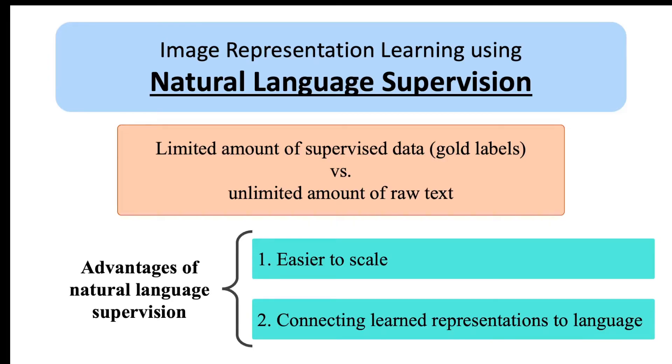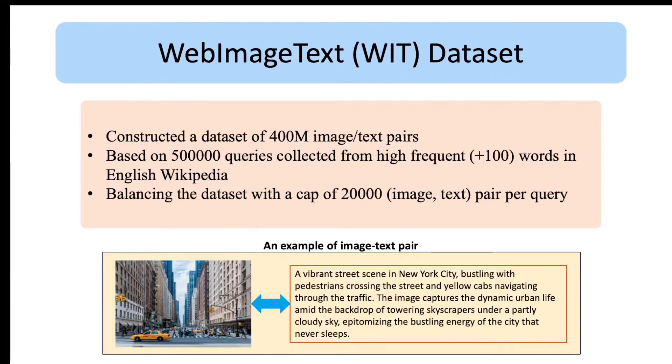This enables several potential applications for multimodal image and text data. For pre-training the CLIP model, they collected a dataset of 400 million pairs of images and text, called the WebImageText or WIT dataset. For building this dataset, they gathered 500,000 queries based on all words in the English Wikipedia that were repeated at least 100 times.